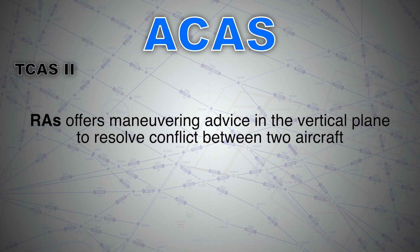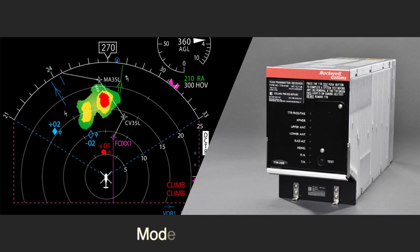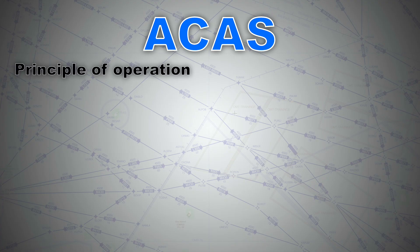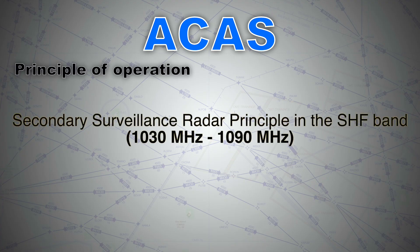If your aircraft and the intruder both have Mode S data link transponders, the system will coordinate the RAs to provide complementary vertical avoidance instructions. Now let's have a look at the principle of operation.